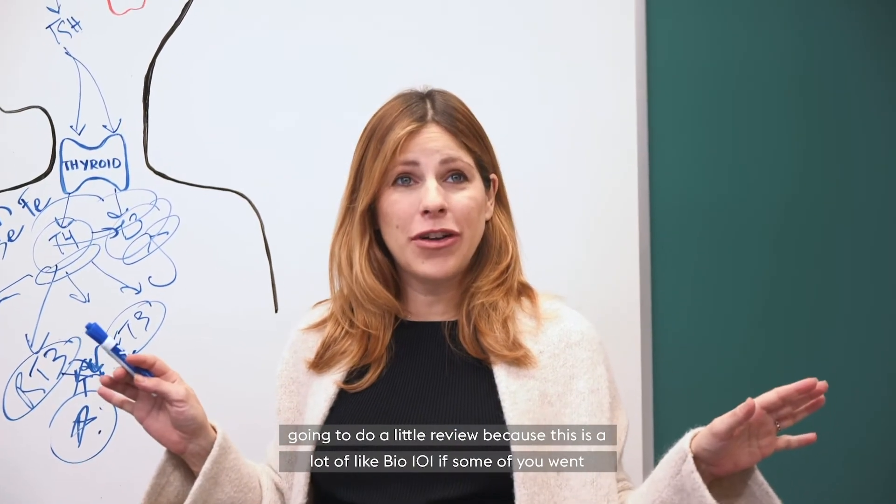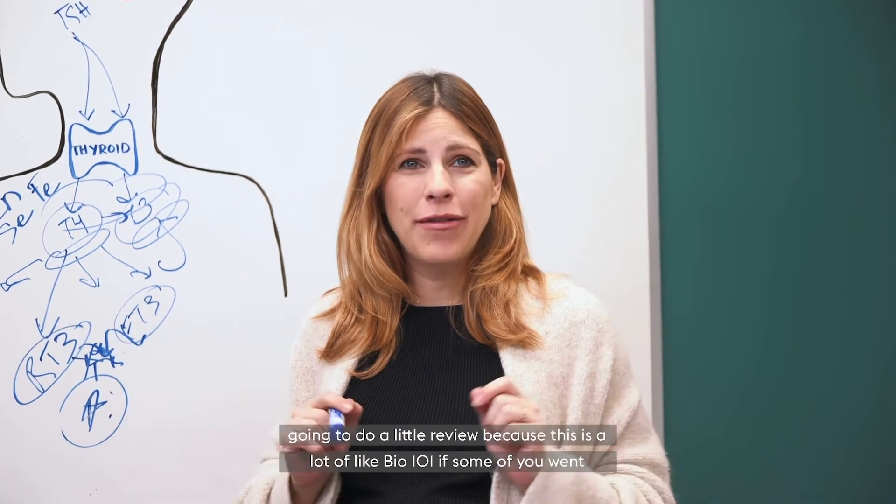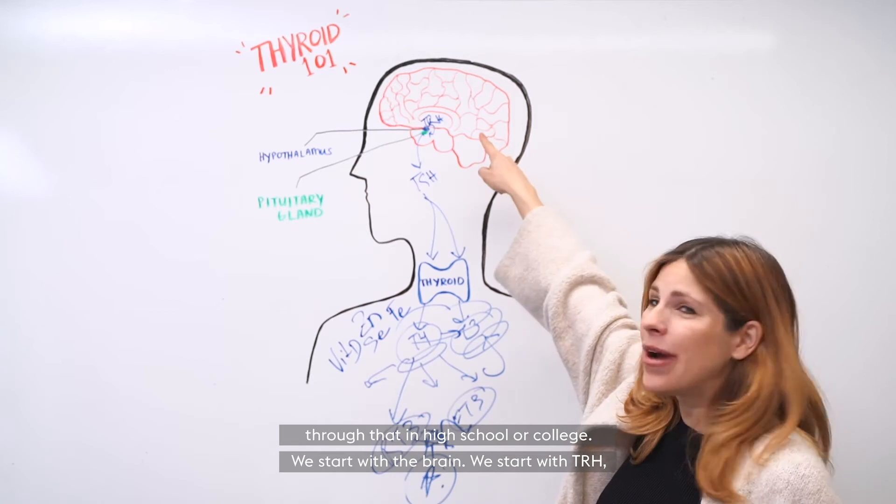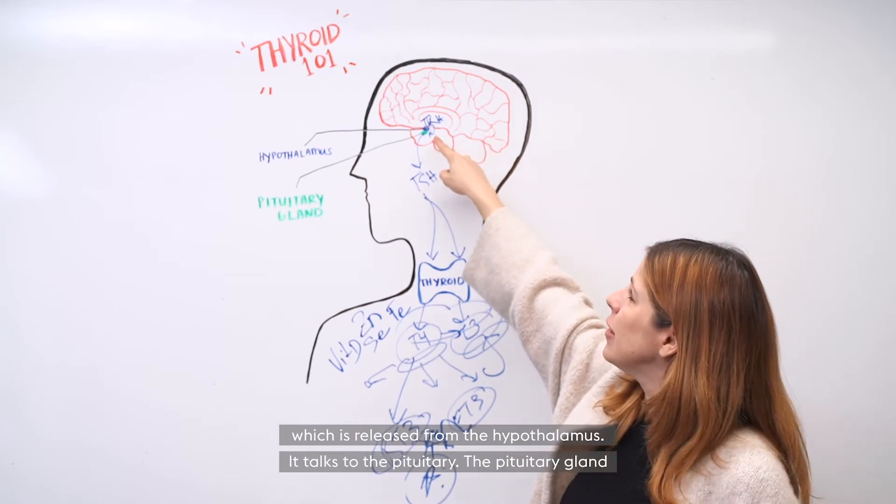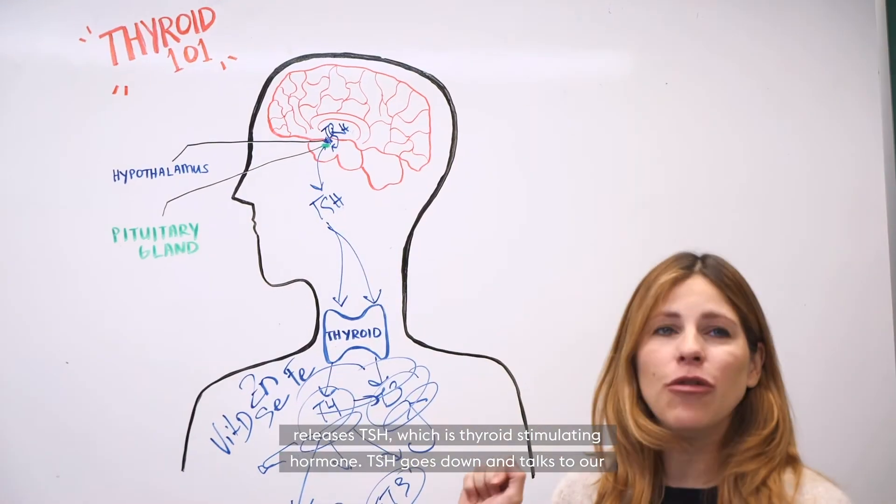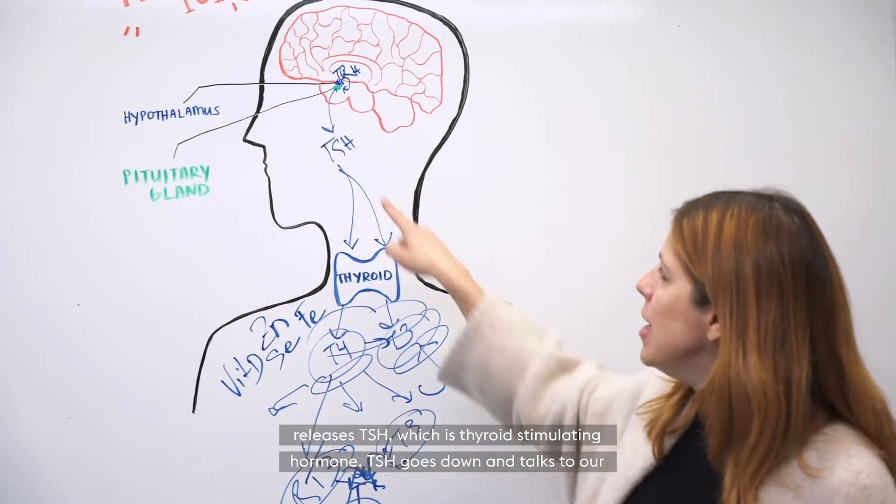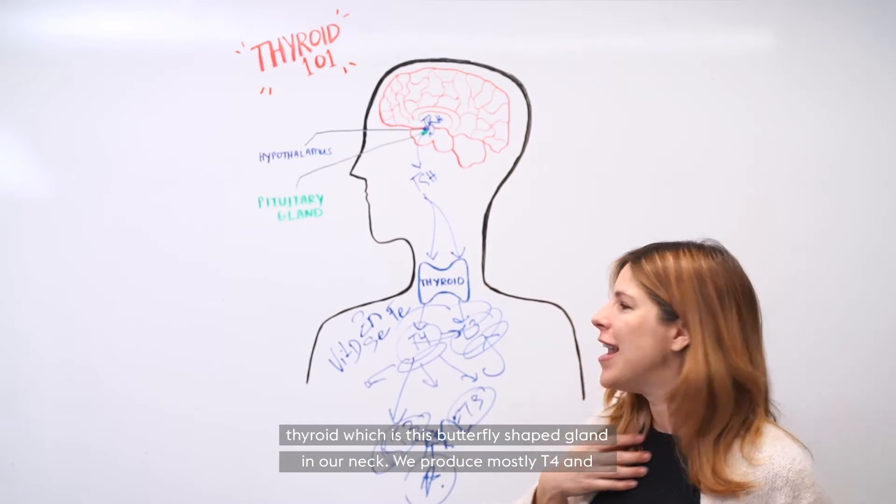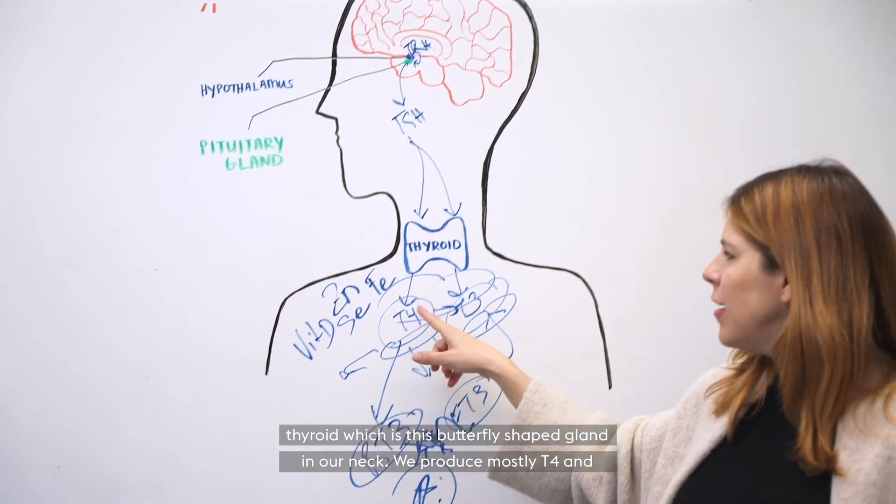All right. So we're going to do a little review. We start with the brain. We start with TRH, which is released from the hypothalamus. It talks to the pituitary. The pituitary gland releases TSH, which is thyroid stimulating hormone. TSH goes down and talks to our thyroid, which is this butterfly shaped gland in our neck. We produce mostly T4.